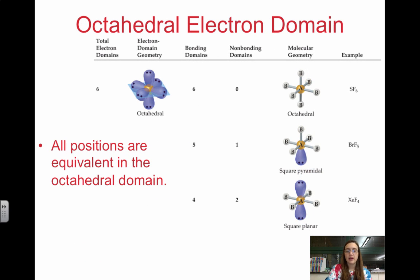Finally, we have octahedral. All positions are equivalent in the octahedral. These all have 90-degree bond angles, so it actually doesn't matter where we remove them from. We have six, zero—that's octahedral still.